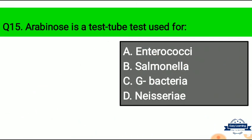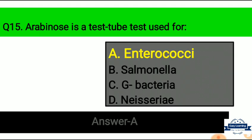Question 15: Arabinose is a test tube test used for — Option A: Enterococci, Option B: Salmonella, Option C: G bacteria, Option D: Neisseria. Correct answer is Option A — Arabinose is a test tube test used for Enterococci.